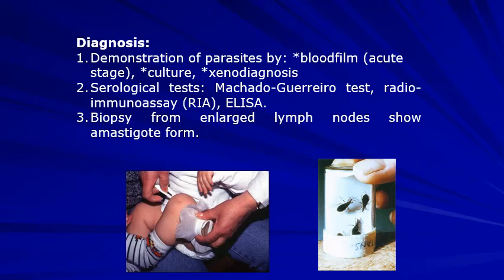Diagnosis is by demonstration of parasites by blood film in the acute stage. If a thin blood film doesn't reveal the parasite, we can do a thick blood film. We can also use culture to find the parasites in blood, using what we call NNN media, which is used for replication and culture of hemoflagellates especially.